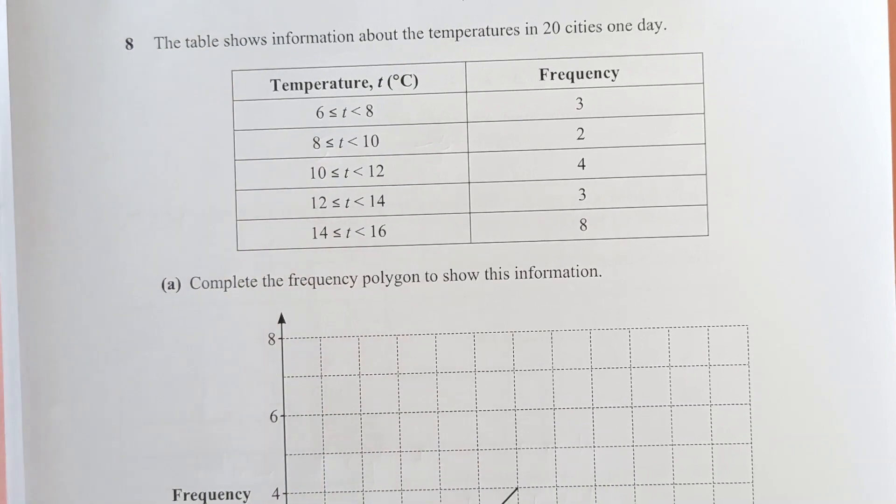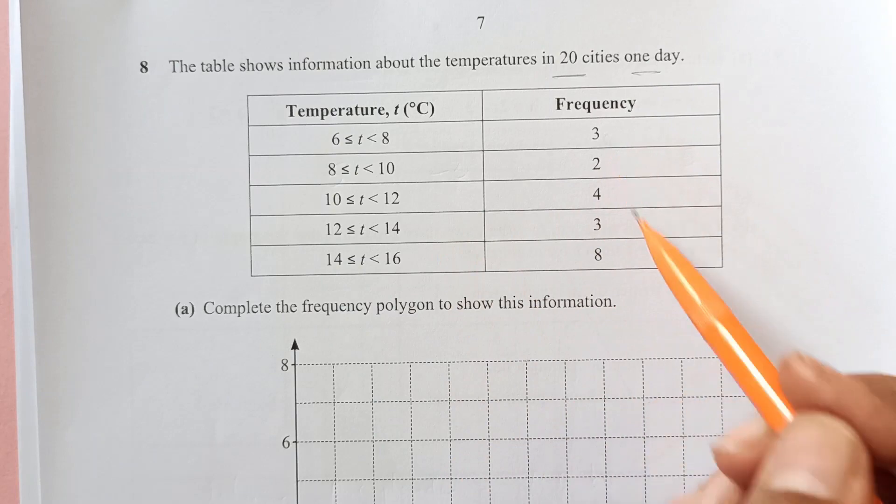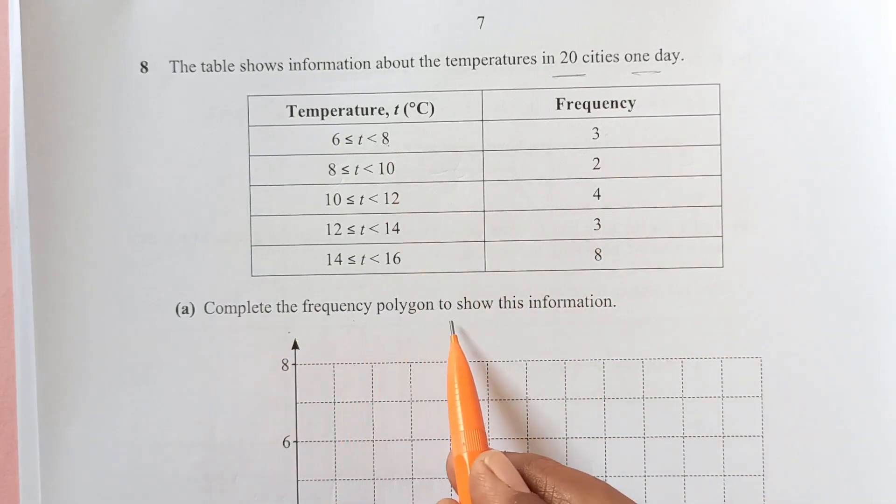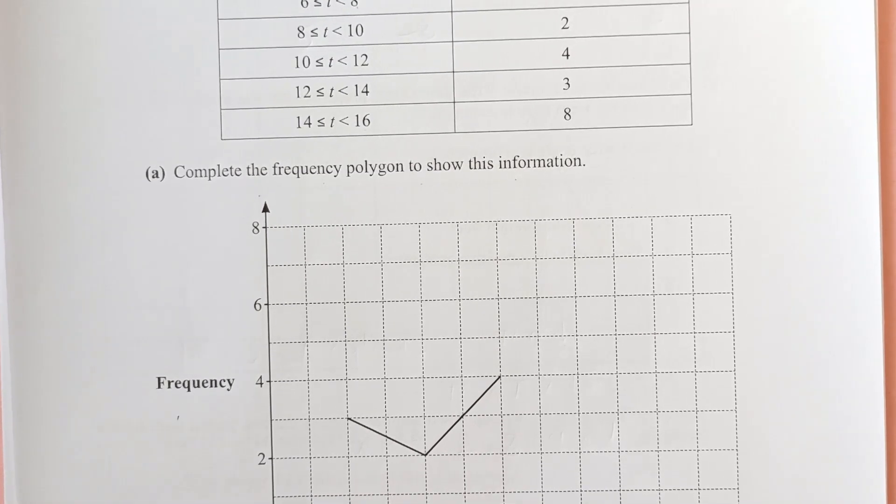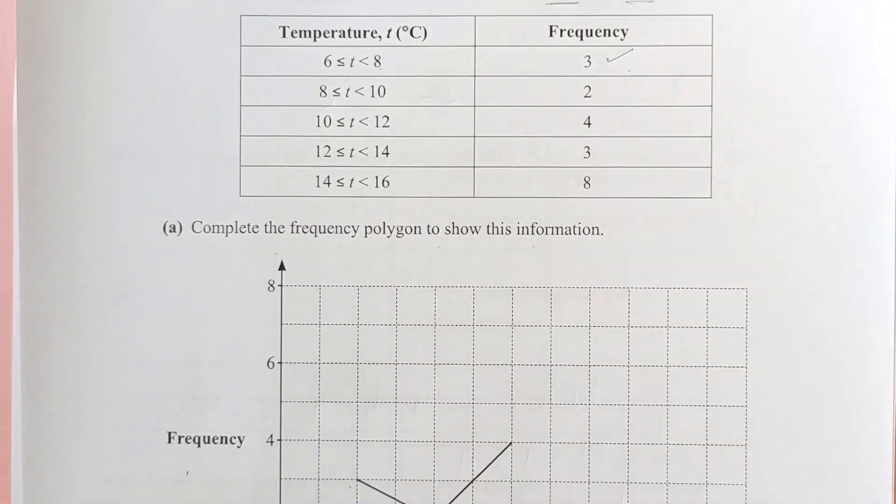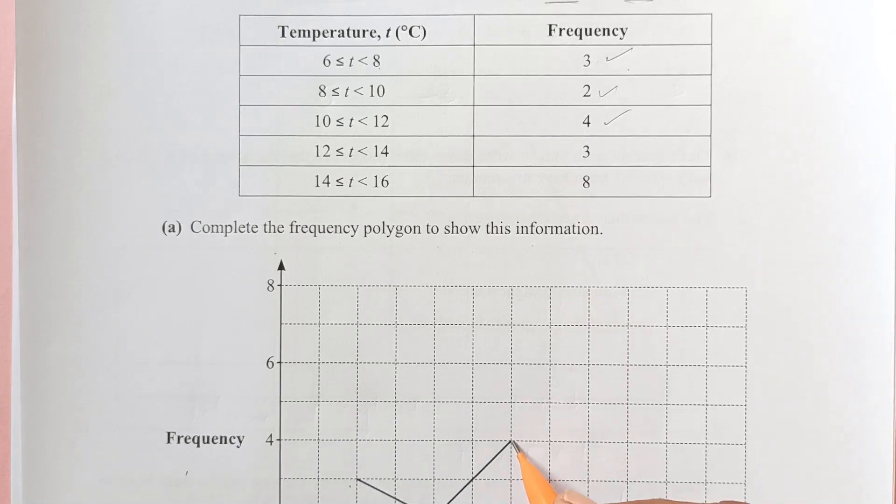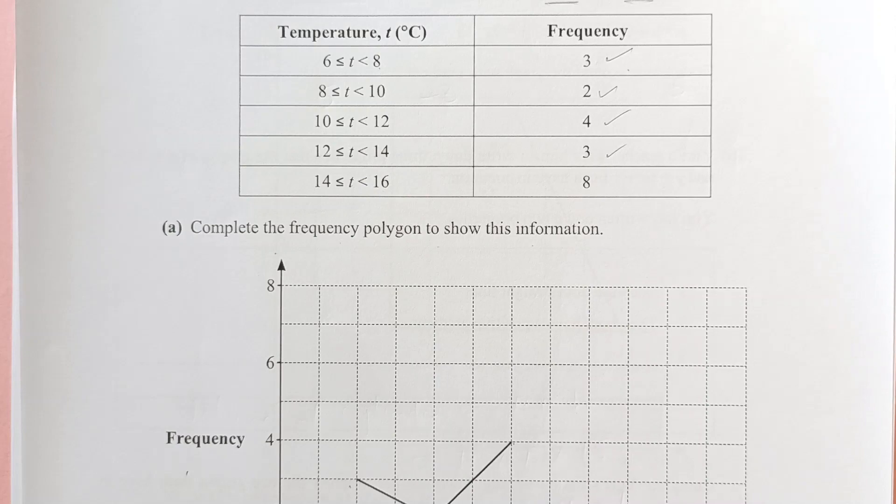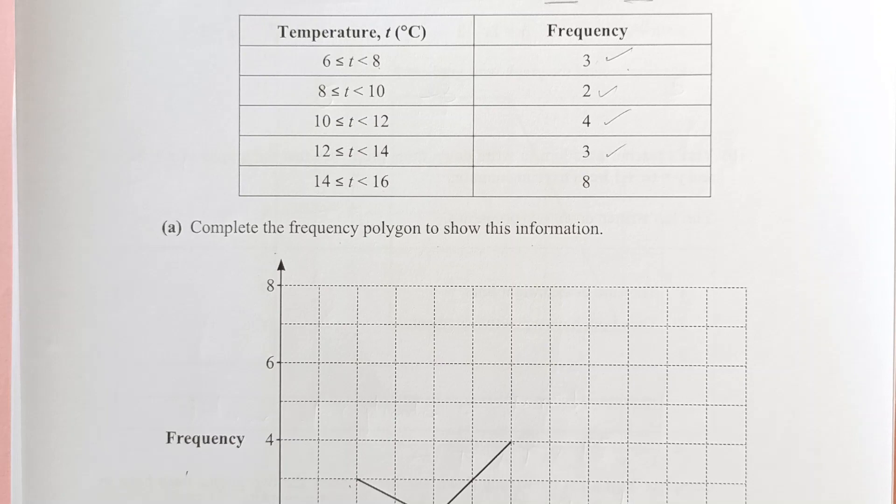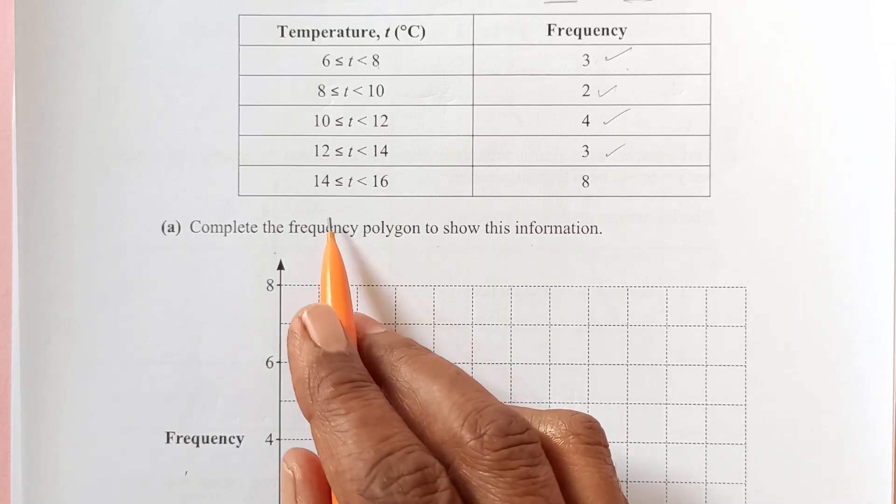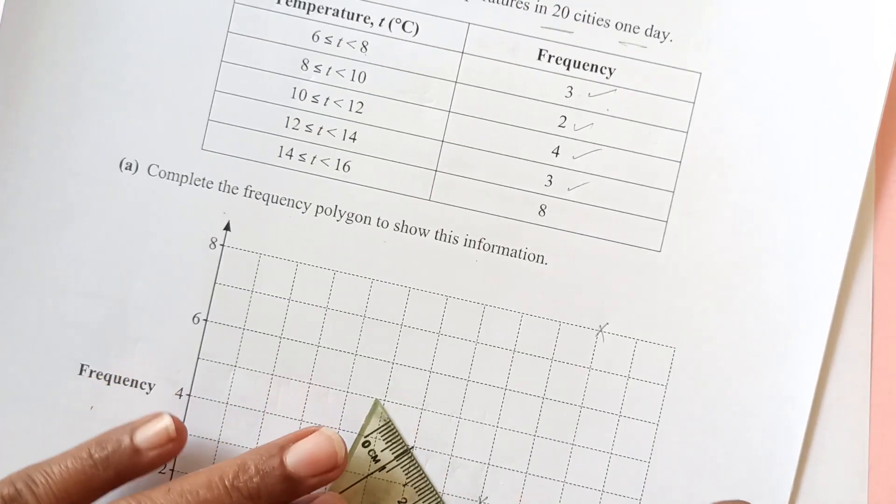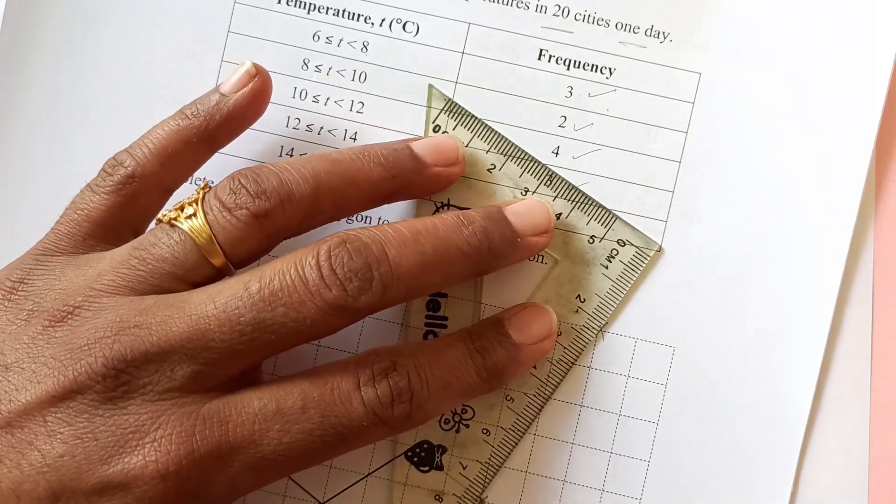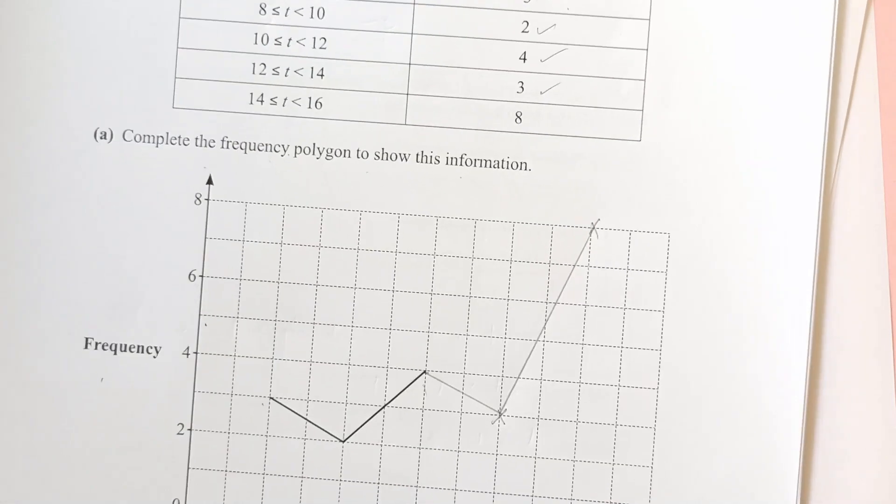Question 8. The table shows information about the temperature in 20 cities in one day. So, here is the frequency. Here is the temperature. Complete the frequency polygon to show this information. This is the frequency polygon here. This is the frequency and this is temperature. We have here 6 to 8. 6 to 8 was 3. Then, 8 to 10 was 2 here. 10 to 12 is 4. 10 to 12 is 4. You see here. Now, 12 to 14. We will take it in the middle. 10 to here. And 12 to 15, this is 3. 3 is here. And then, we have 14 to 16. 14 to 16, it is 8. We will take the middle here. So, just join it using our ruler. This is how you can complete this one.